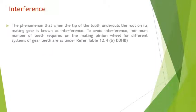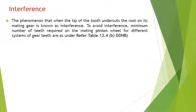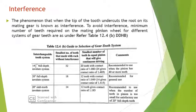Interference in gears refers to the phenomenon of tooth profiles overlapping and cutting into each other, or when the tip of a tooth undercuts the root on its mating gear. This results in excessive wear and vibrations. To avoid interference, minimum numbers of teeth are prescribed: for the 14.5 degree system it is 32, for the 20 degree full depth system it is 18, and for the 20 degree stub tooth system it is 14.